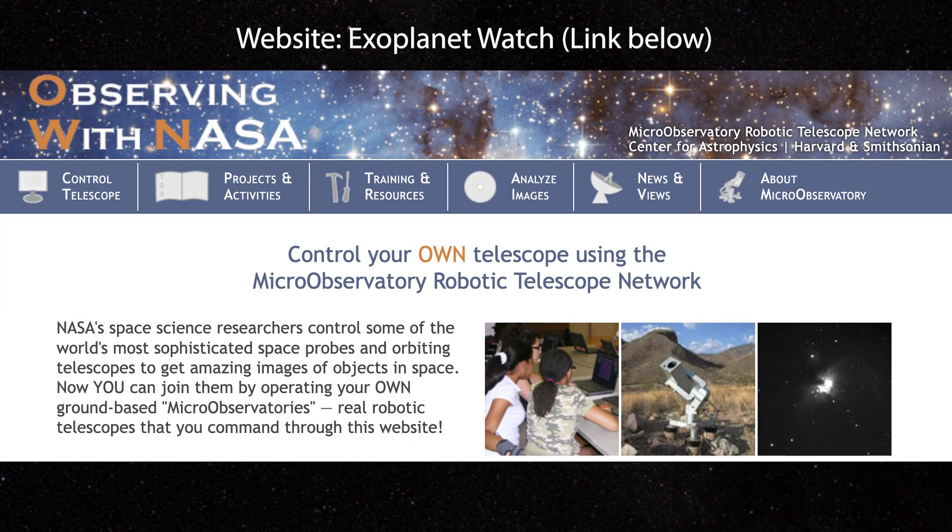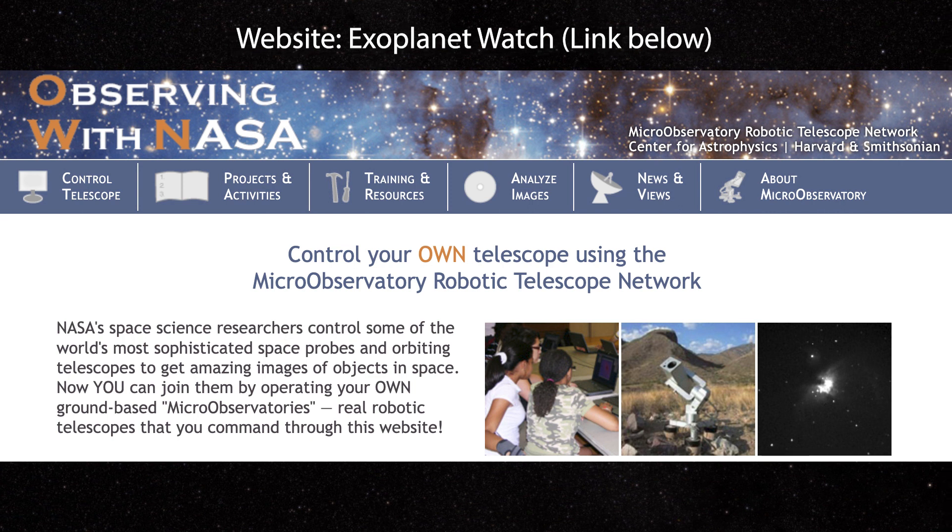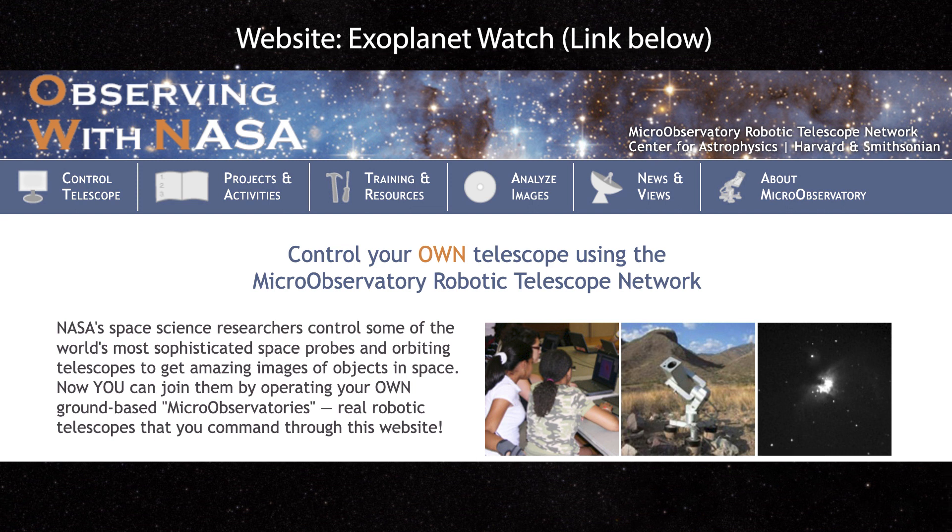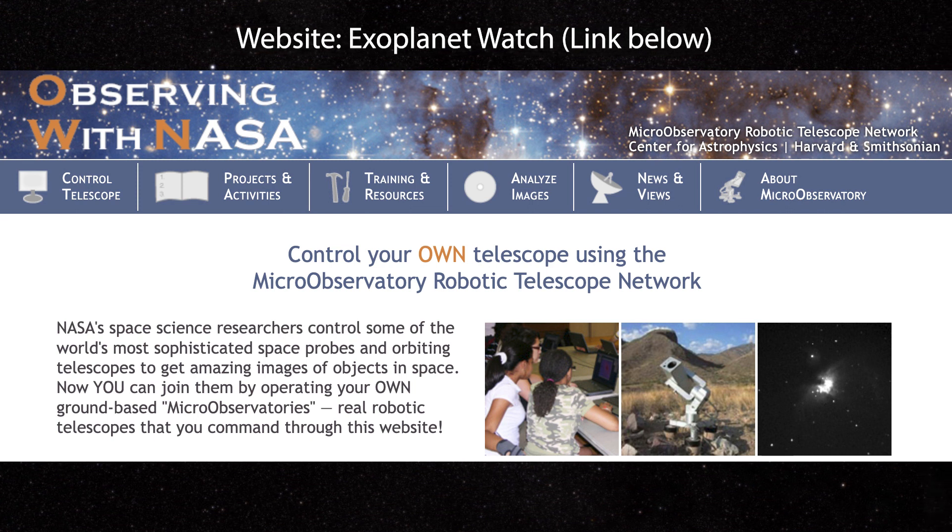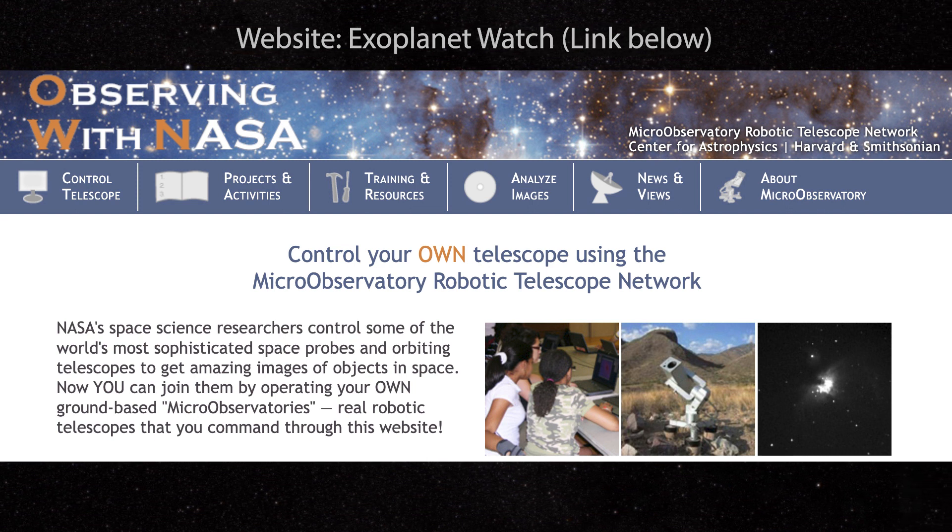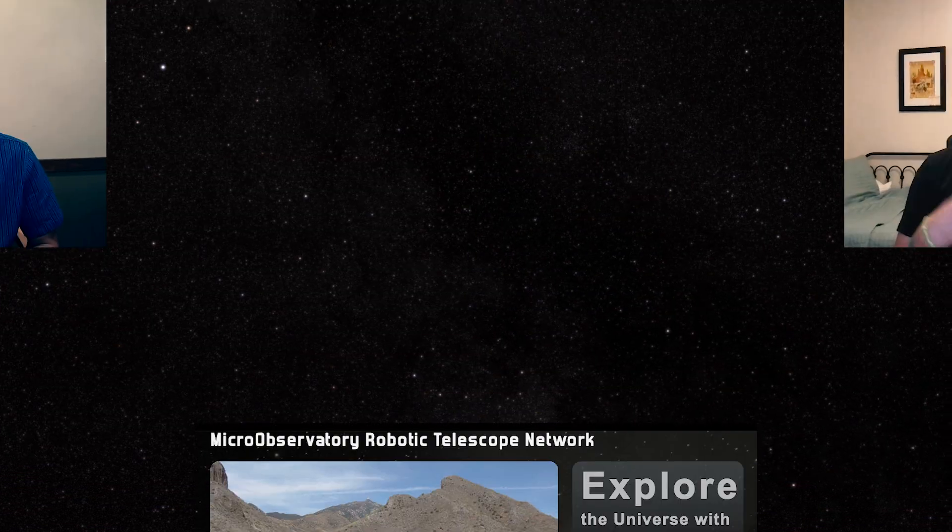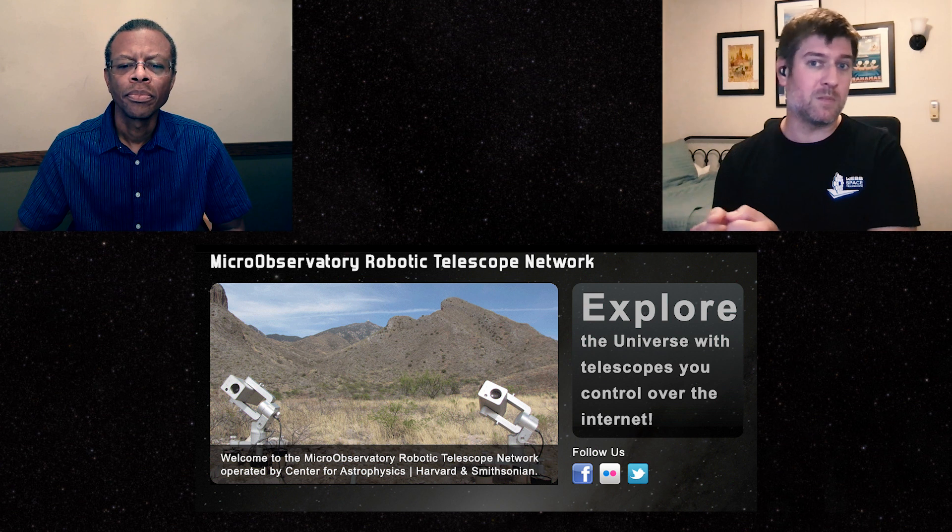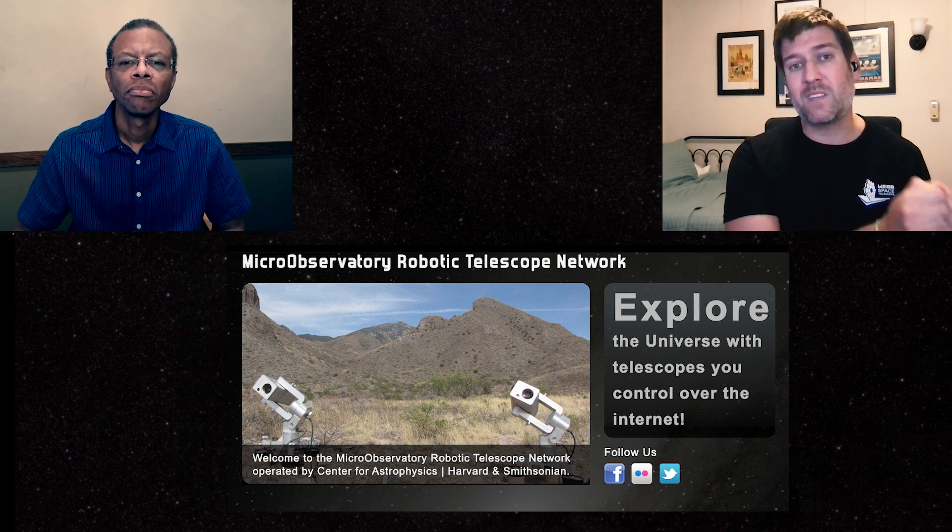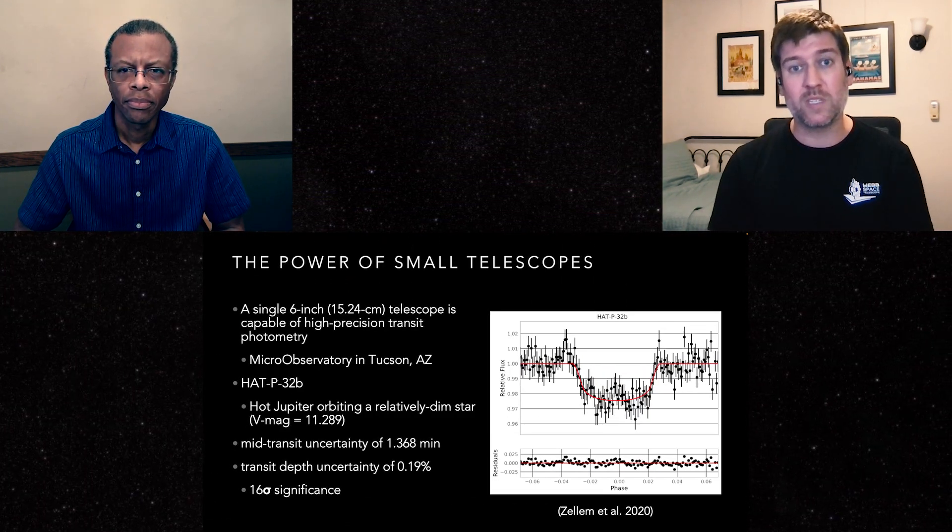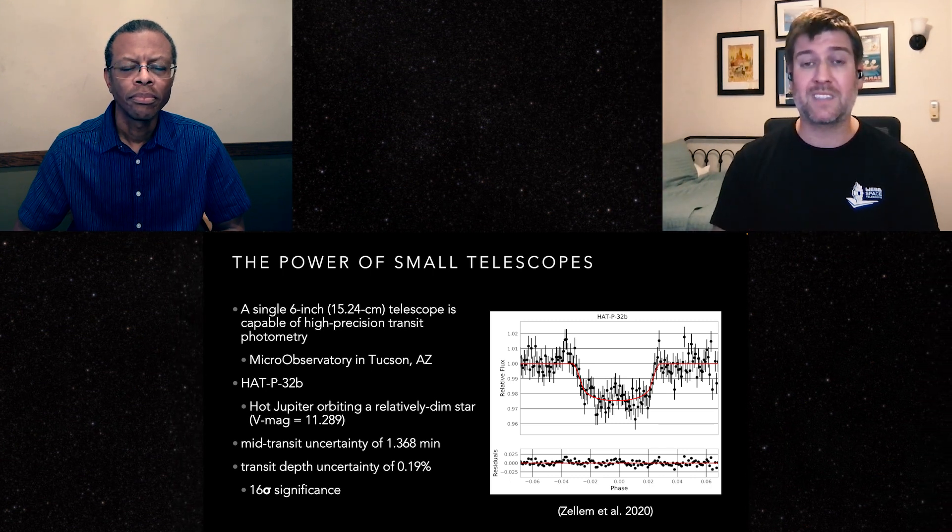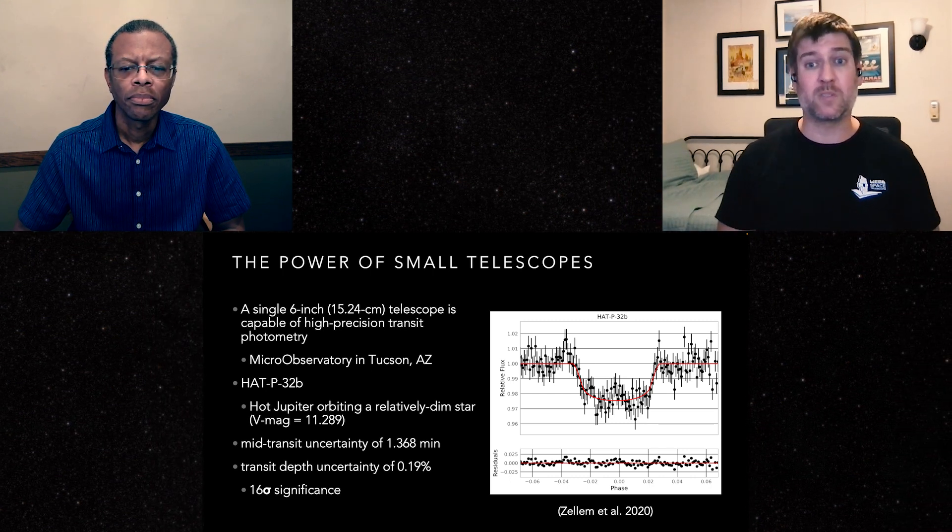You can join our project Exoplanet Watch. You can observe transits of exoplanets using your telescope. You have people contributing to our project with telescopes as small as four inches, about 10 centimeters. You can make scientifically impactful measurements. You can help us refine these times and you can help us use these resources a lot more efficiently, which means perhaps maximize science output from these really precious resources.